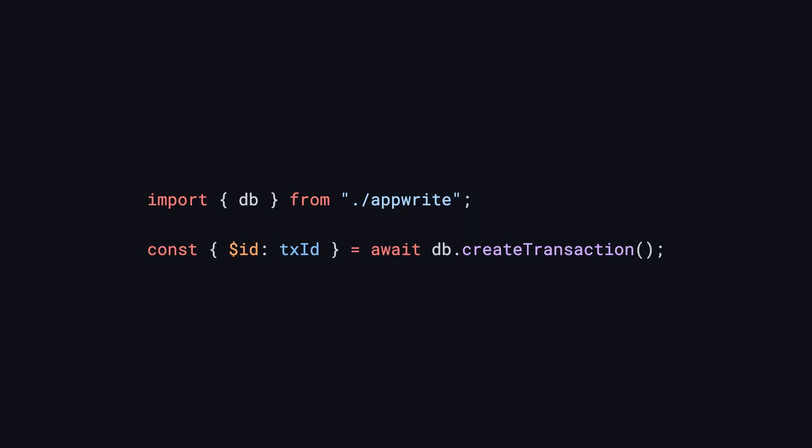This is actually a three-step process and it's very simple. First, you're going to want to create a transaction. We have the create transaction method, and this returns an instance of the transaction from which we just need the ID. So we save and store that transaction ID.